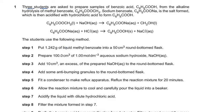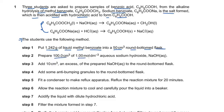Question 1 states that three students are asked to prepare a sample of benzoic acid from the alkaline hydrolysis of methyl benzoate. Sodium benzoate is a salt formed, which is then acidified with hydrochloric acid to form benzoic acid. The equation and procedure are given — step 1 requires 1.242 g of liquid methyl benzoate in a 50 cm³ round-bottom flask, and step 2 requires preparing 100 cm³ of 1 mol/dm³ aqueous sodium hydroxide.